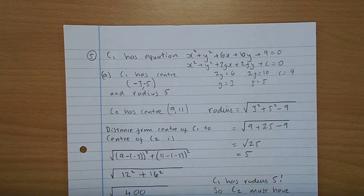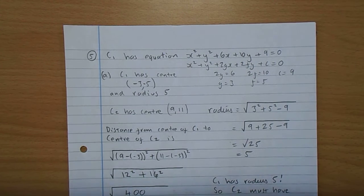of circle C2 is 9, 11. Circle C1 and C2 touch externally. Determine the radius of C2.